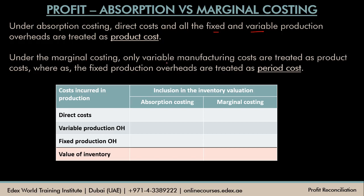Under marginal costing there is one difference: only the variable manufacturing cost is treated as product cost. All the direct costs plus all the variable production overheads are treated as product cost, whereas the fixed production overheads are treated as period cost. The difference is that in absorption costing, direct cost plus variable and fixed production overheads are all product cost, whereas in marginal costing the fixed production overheads are not treated as product cost — they are treated as period cost, meaning you don't try to associate fixed overheads with the product. They are considered irrelevant for decision making.